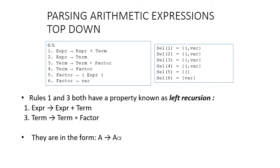If you notice, rule 1 and rule 3 both have a property called left recursion. What is left recursion? In this form, after the derivation arrow, the rule will meet the same non-terminal again. If you look at rule 1, after the derivation arrow, expression meets expression again. Same goes for rule 3 — after the derivation arrow, term meets term. This is the left recursion property. A grammar that shows the property of left recursion cannot be used to parse an input string.